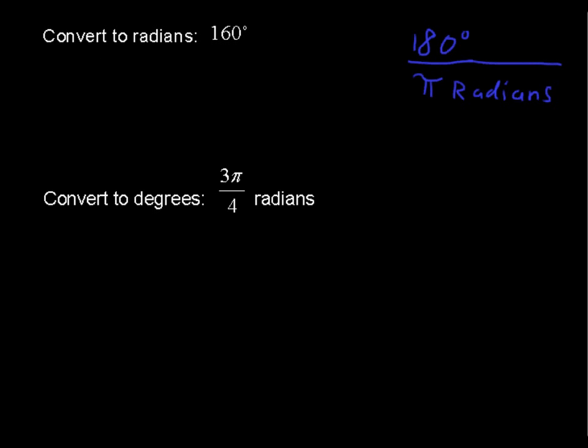For example, 160 degrees is what we're starting with. And we're going to use actually something from a science class, that's unit conversion. 160 degrees divided by 1. You can make anything into a fraction by putting it over 1.